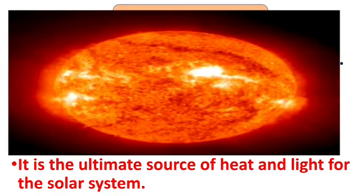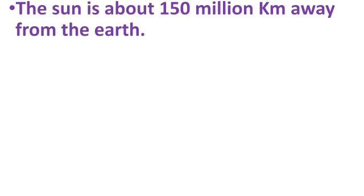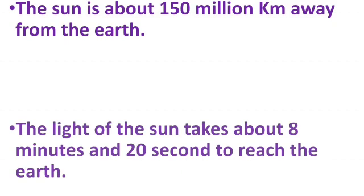Now let's talk more about the sun. The sun is about 150 million kilometers away from the earth. The light of the sun takes about 8 minutes and 20 seconds to reach the earth.